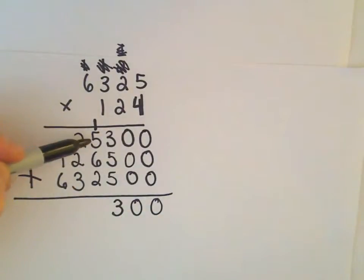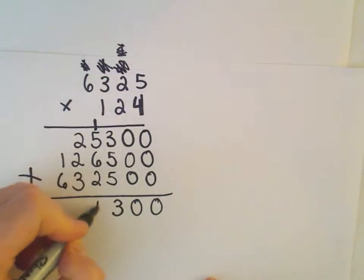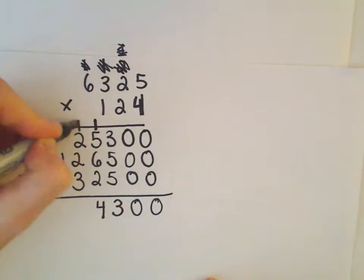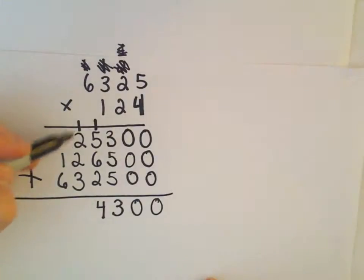So 1 plus 5 is 6, plus 6 is 12. 12 plus 2 is 14. I'm going to carry a 1 to the next column. 1 plus 2 is 3, plus 2 is 5, plus 3 is 8. 1 plus 6 is 8.